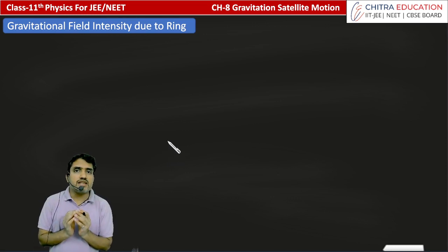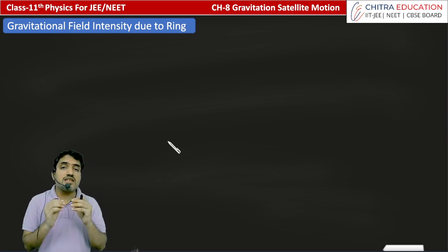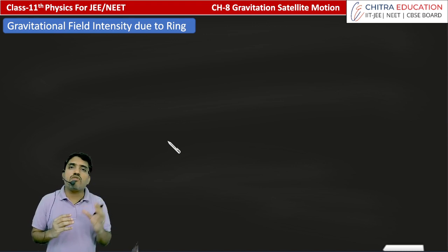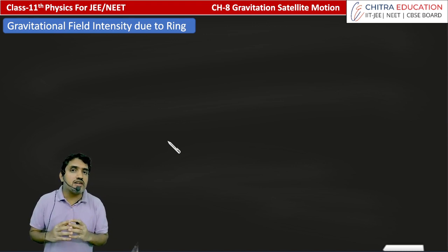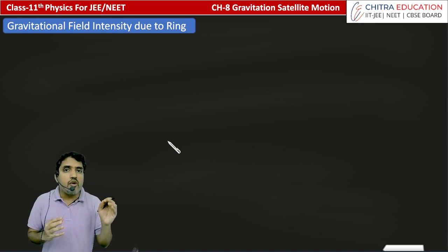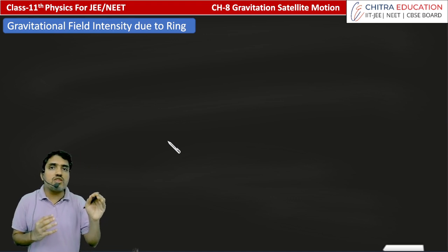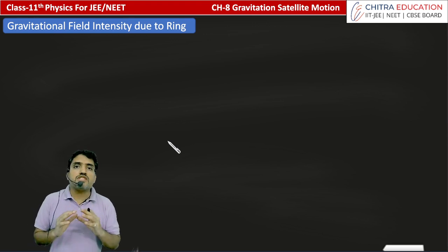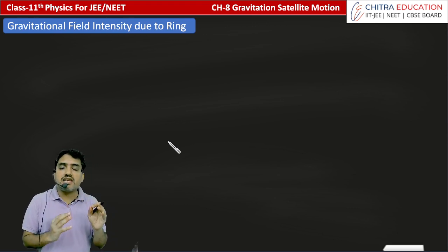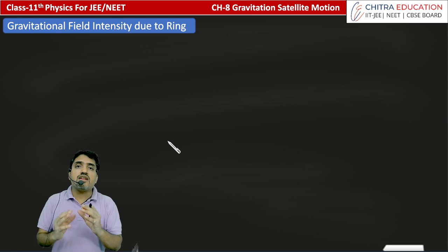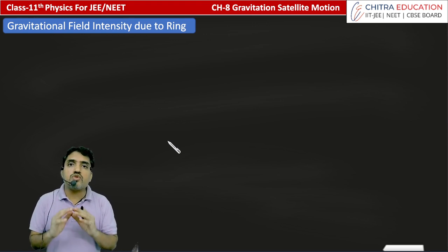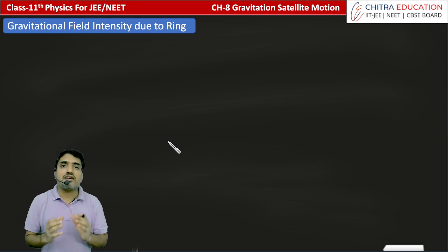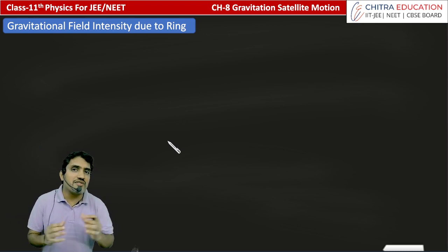If we talk about a body, a particle, a mass — that body creates an environment on its four sides. A region is created where if someone places a test mass, then that gravitational force is felt. So that space, that surrounding where gravitational force is felt, we call it a gravitational field.